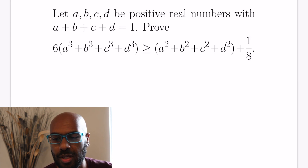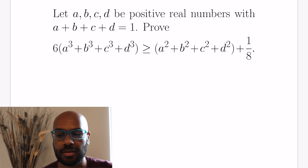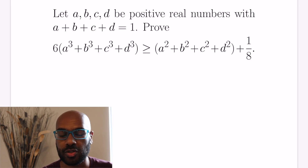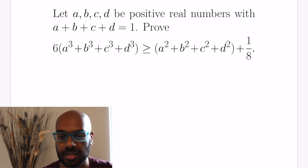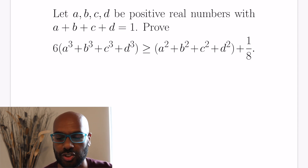If you look at this inequality, it's kind of weird. You'd think the cubes are much, much larger than the squares. But these numbers, because they're positive and they sum to 1, have to be between 0 and 1. So the cubes are actually smaller than the squares. It's interesting that you have an inequality in this direction.